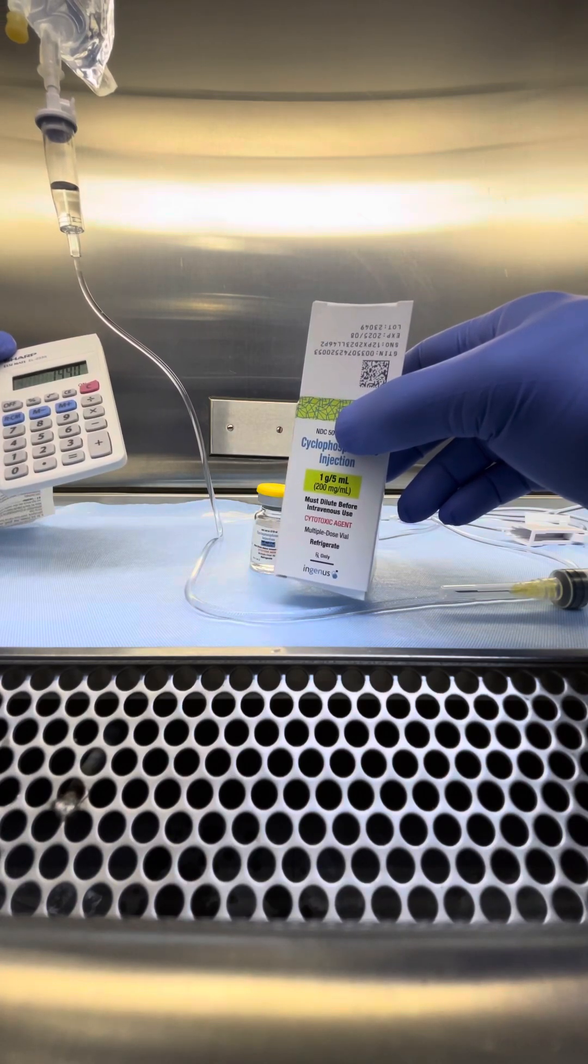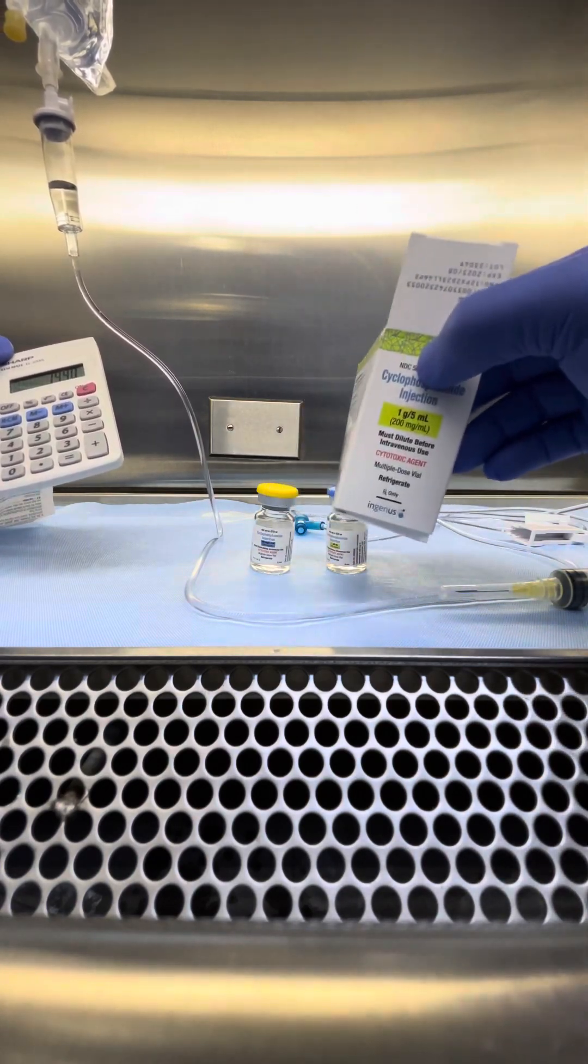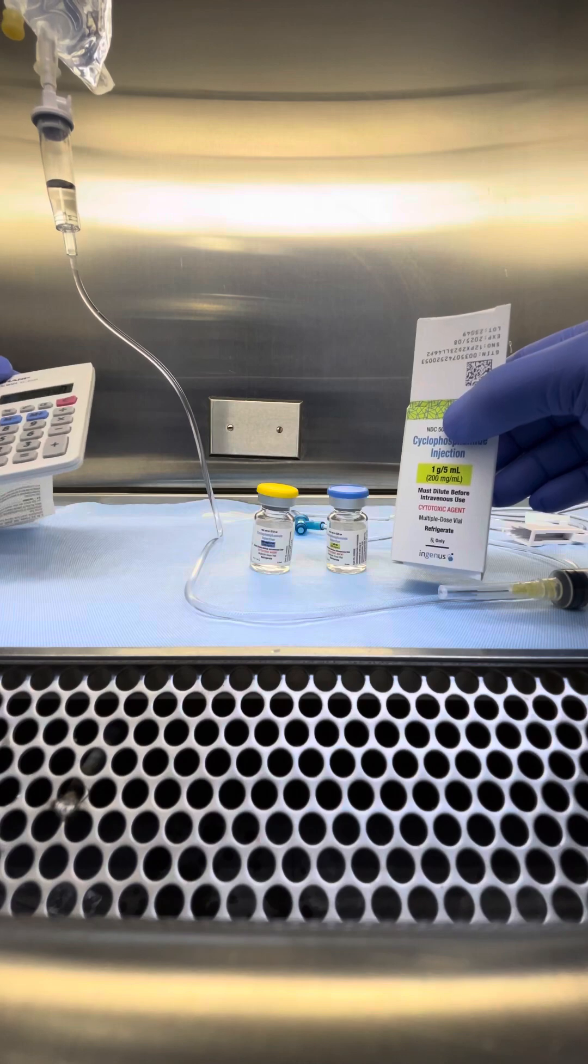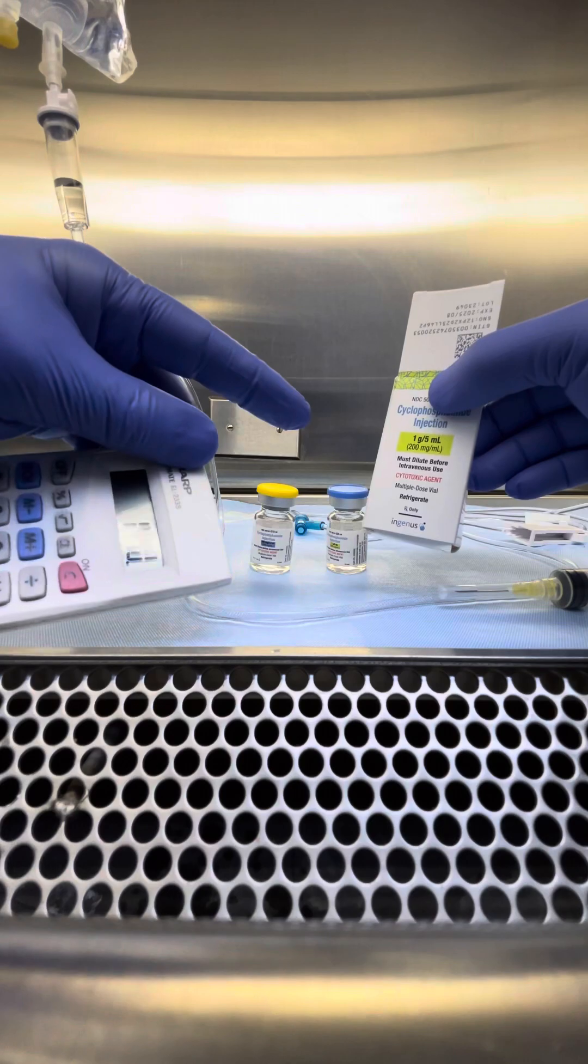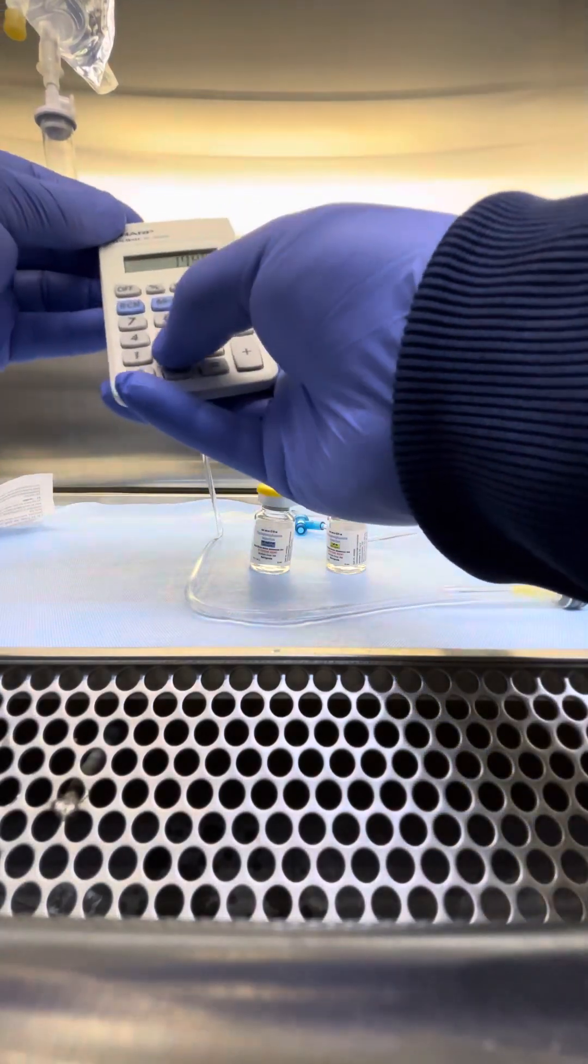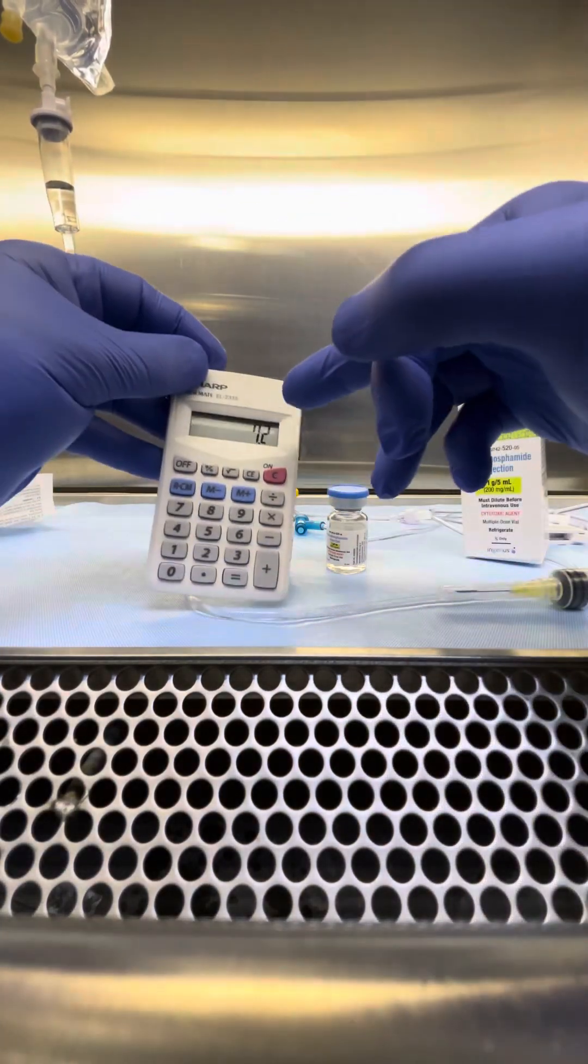Here, it says 200 milligrams per ml. These come in different concentrations. This one, these two are the same concentration, and I do not have to reconstitute it, but we dilute it in the bag here. So, 200. That gives me 7.2 ml.